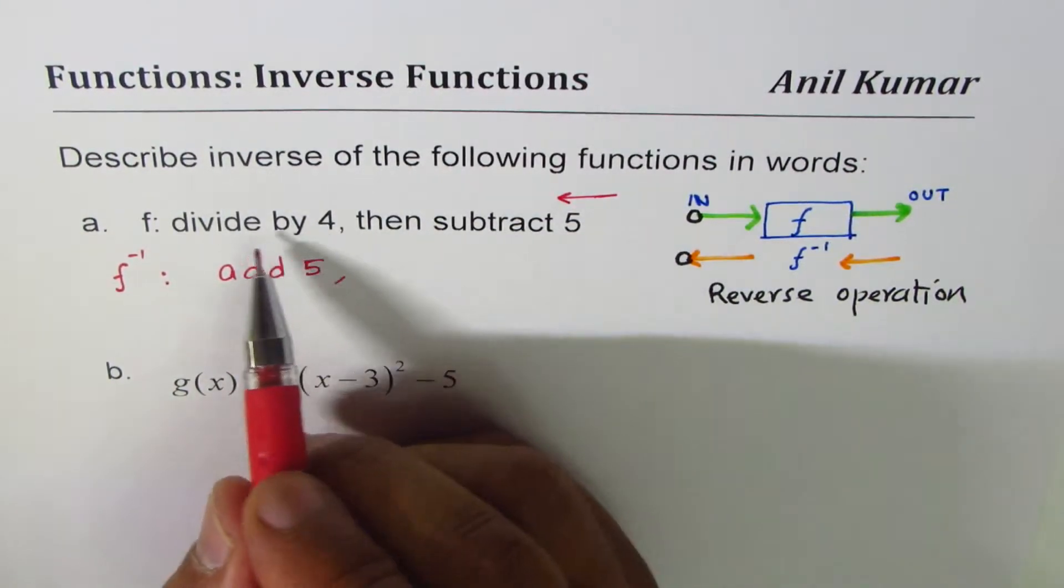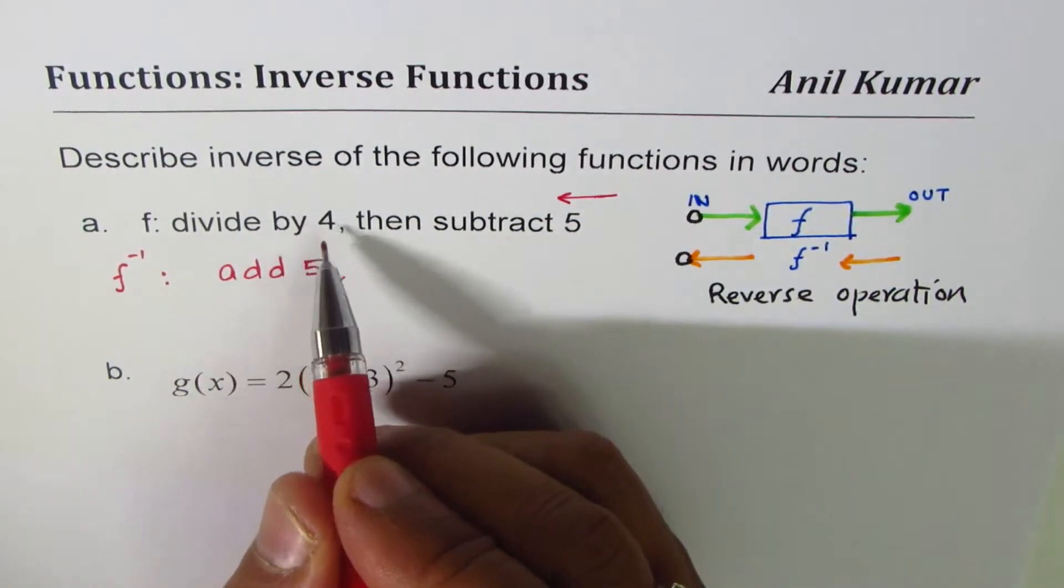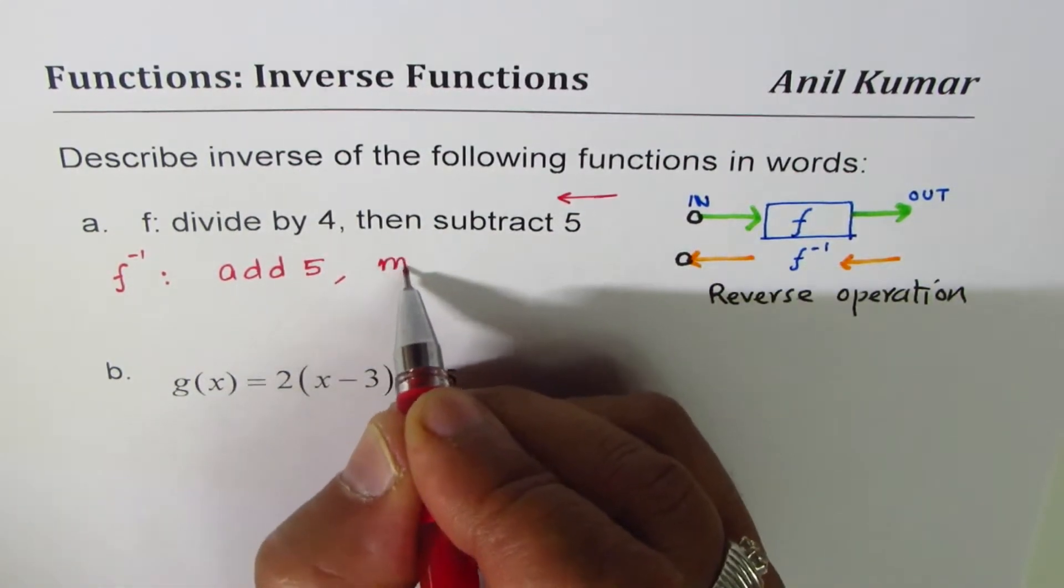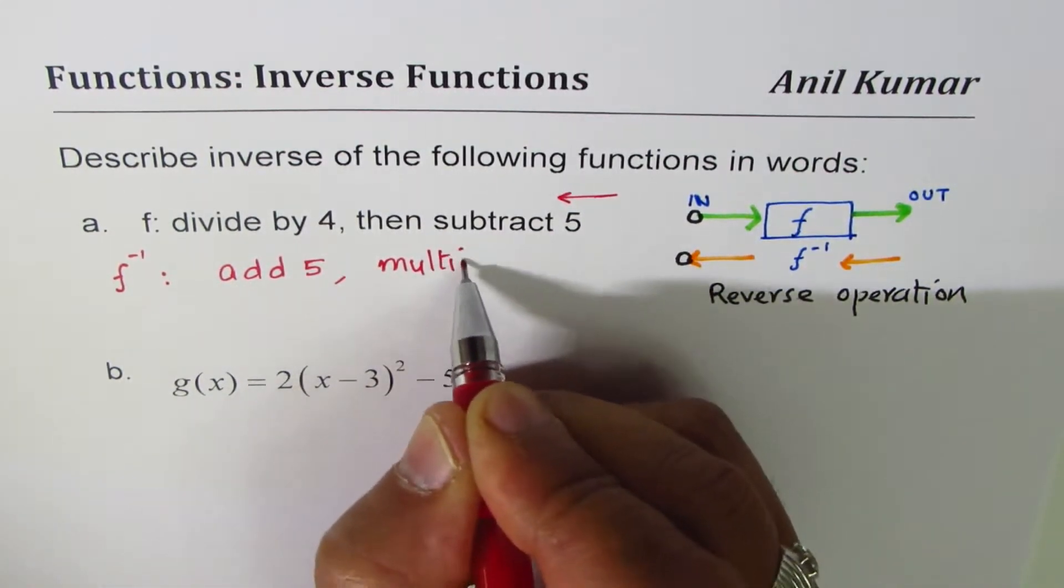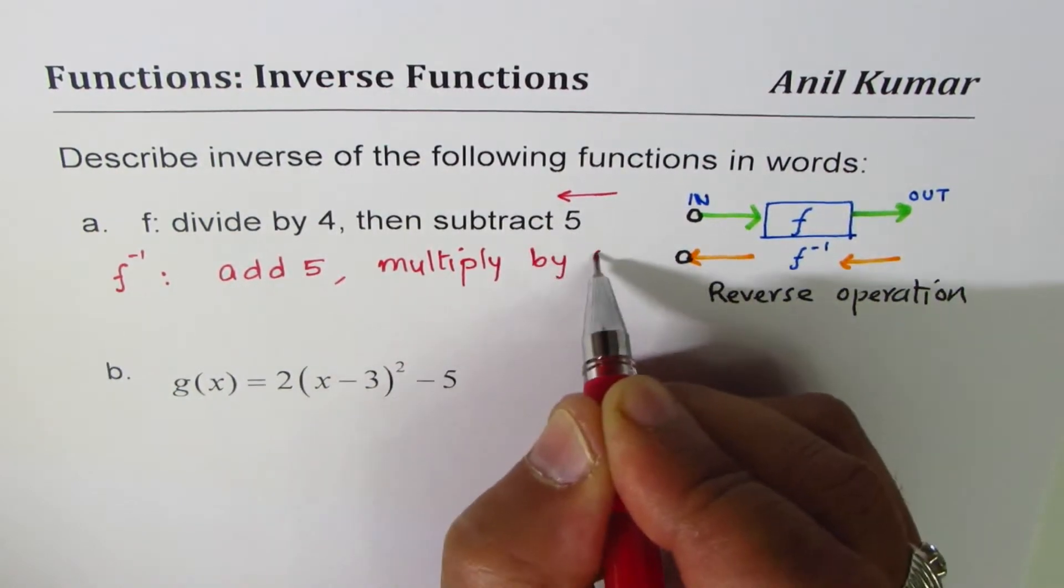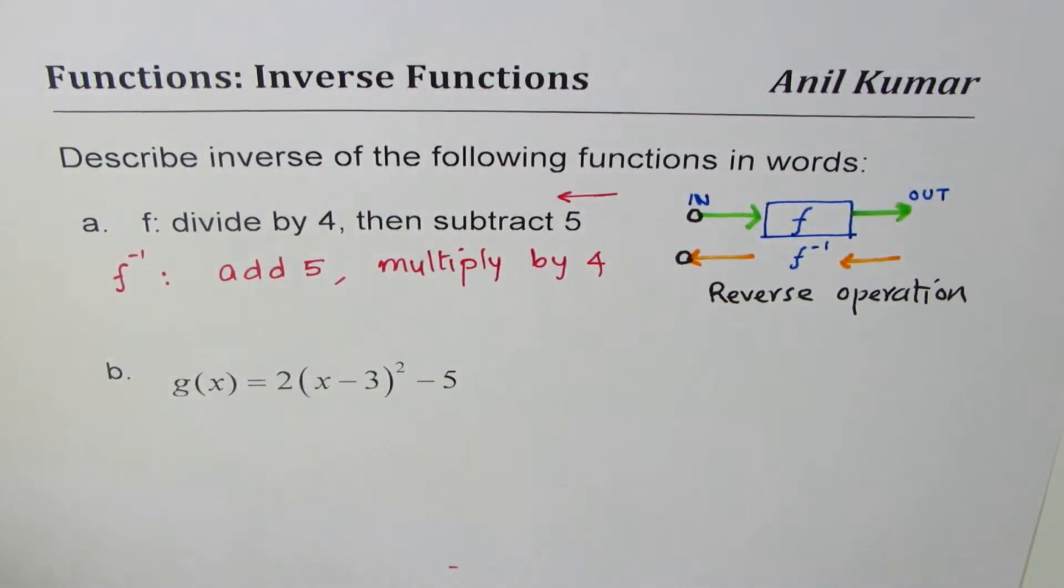And then what do you do? Divide by 4. No, you do multiply by 4. Do you understand? That is how it works.